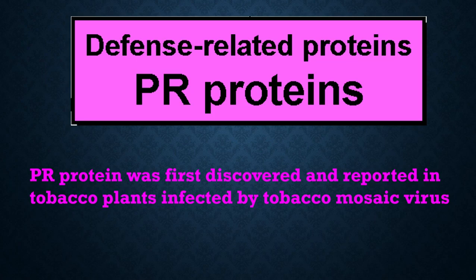PR proteins are popularly known as pathogenesis-related proteins. From the very word itself, you can understand that these proteins play indispensable roles in plant defense mechanism. These are defense-related proteins that were first discovered and reported in tobacco plants infected by tobacco mosaic virus.